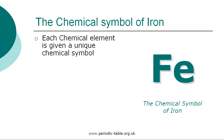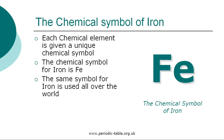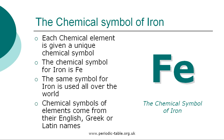Each chemical element is given a unique chemical symbol, which is used all over the world. The chemical symbol for iron is Fe. The chemical symbols of elements come from their English, Greek, or Latin names. The first letter of a symbol is always a capital letter, and if there are any subsequent letters, they are expressed in lowercase.